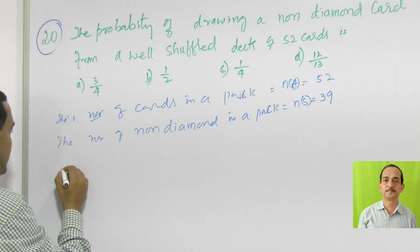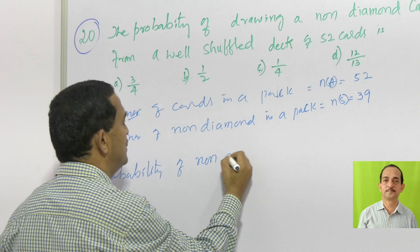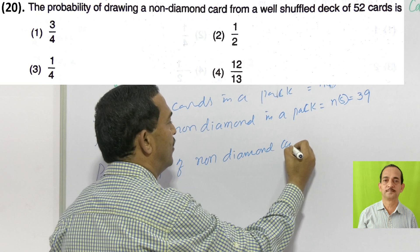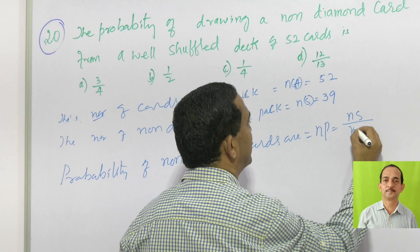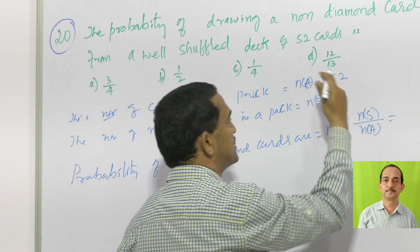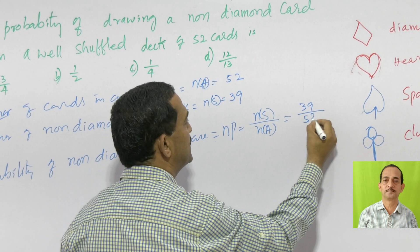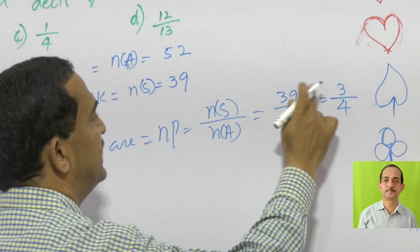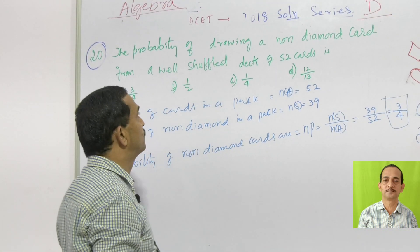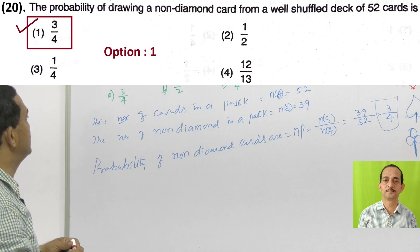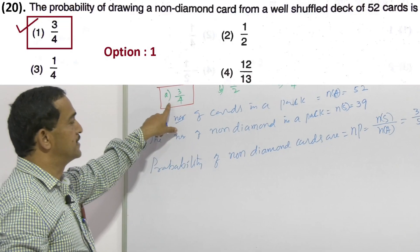Now, the probability of non-diamond card, N of P we can call that is N of S divided by N of A. The notation was different as you wish. What is N of S? 39 divided by N of A is how much? 52. That is equal to 3 by 4. 13 threes are, 13 fours are 52. Therefore, the answer is 3 by 4. Is there any answer here? So the answer for this problem is A.